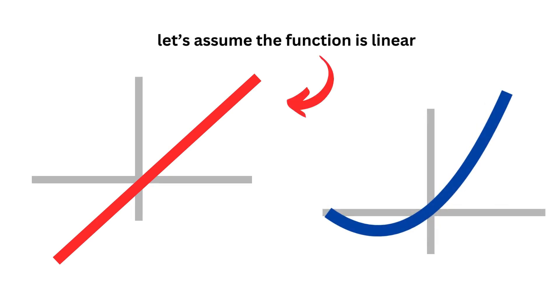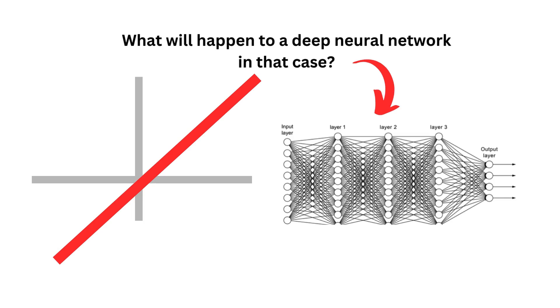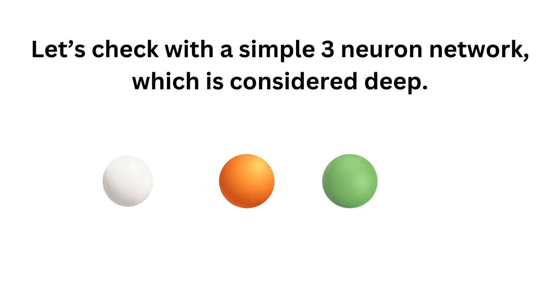Let's assume the function is linear. What will happen to a deep neural network if that's the case? Let's check with a simple 3-neuron network example, which is considered deep, even though it's not very wide.